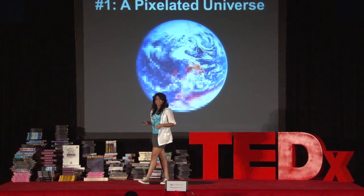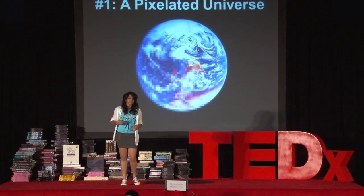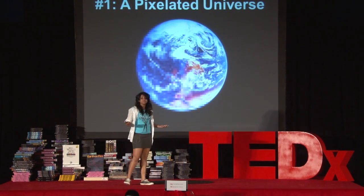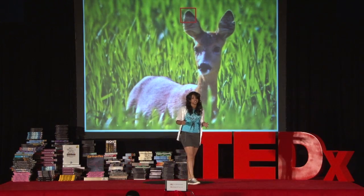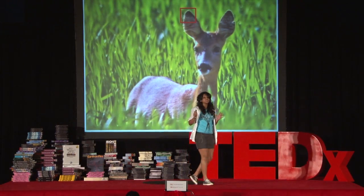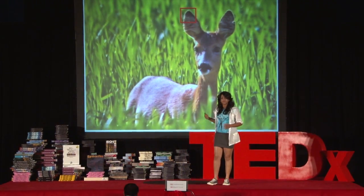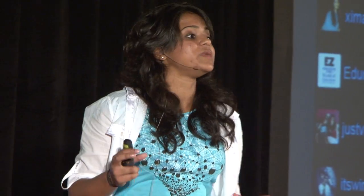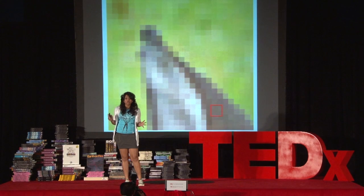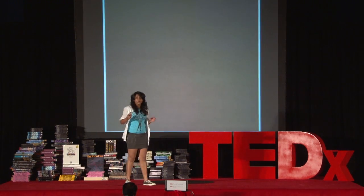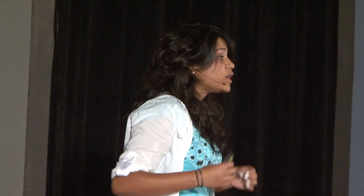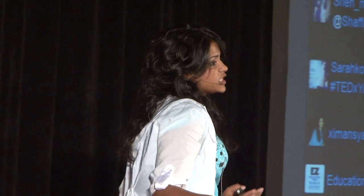Evidence number one: a pixelated universe. Pictures and images are made up of pixels. No matter how high the resolution of an image is, it will still blur as you zoom in further. When you can see each and every individual pixel, it won't matter how much more you focus, because it holds no significance. Zooming further would have no meaning — it would reveal nothing smaller.